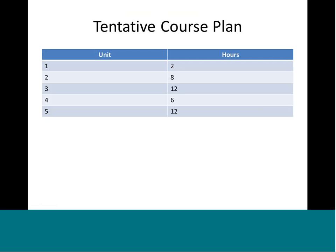The tentative course plan shows the number of hours planned for each unit. Units 1 and 2 combined are the refresher material, while Units 3, 4, and 5 comprise the majority of the course — synthesis and timing analysis are heavily loaded since they are the focus. Units 3, 4, and 5 also involve lab work, since much of it should be practical in nature with theory being a minimal part.